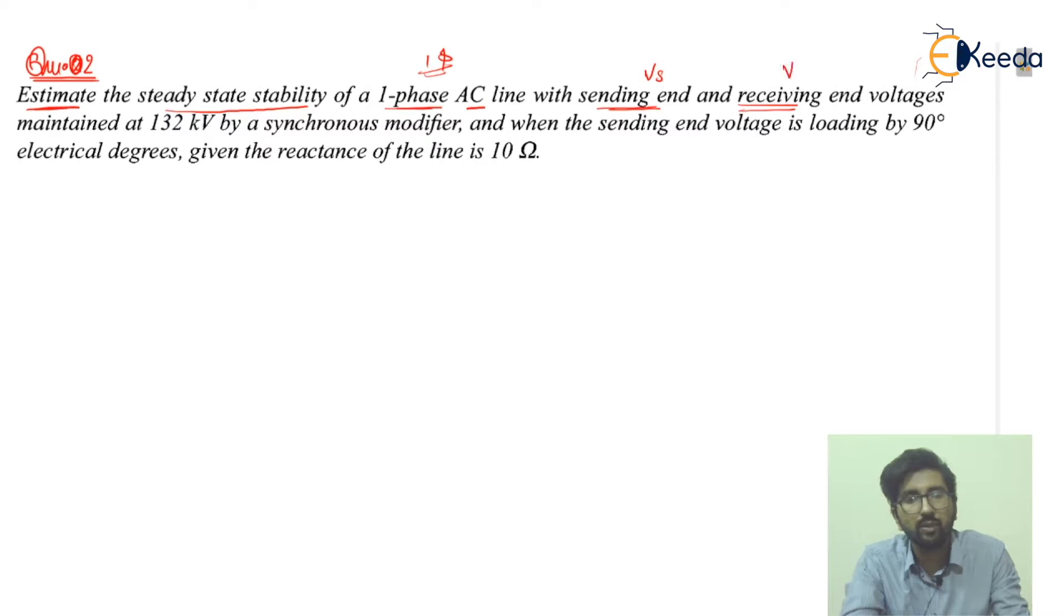This can be called as Vs, the sending end voltage, and Vr, the receiving end voltage. These are actually maintained, both are maintained at the same level, and this is actually 132 kV. So I can write that Vs is 132 kV and Vr is also 132 kV.